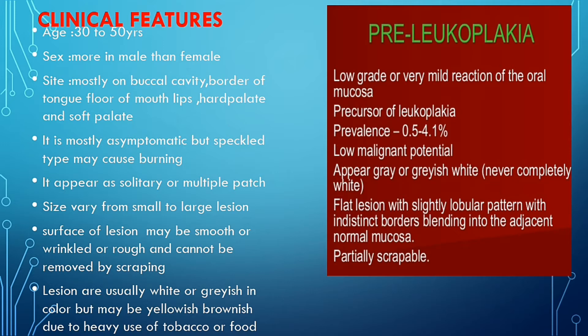The appearance of pre-leukoplakia is gray or grayish-white in color — never completely white — while leukoplakia mostly appears white. The surface of the lesion is flat with a slightly lobulated pattern, and the borders are not well-defined, so you cannot easily distinguish them from normal mucosa. Pre-leukoplakia is partially scrappable, while leukoplakia cannot normally be scraped off.